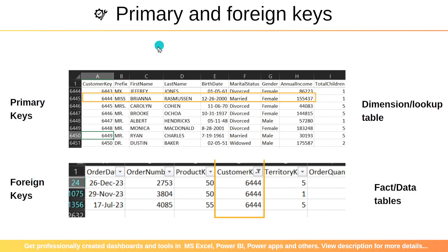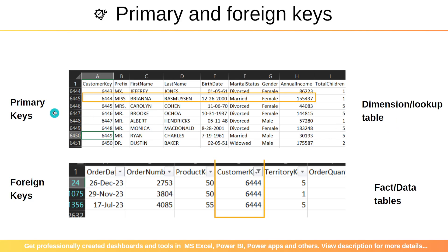Let's understand primary and foreign keys in Power BI. Primary keys are keys which are unique inside any particular table. In this customer table, there is a customer key — 6443, 6444, 6445, and so on. All these customer IDs are unique, so they become the primary key. The primary key table is also known as a dimension table or lookup table.